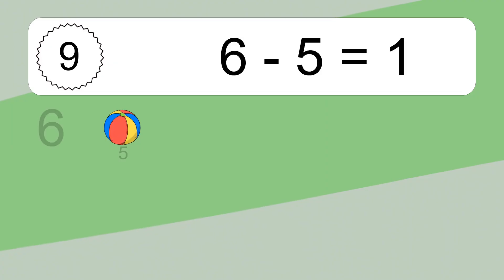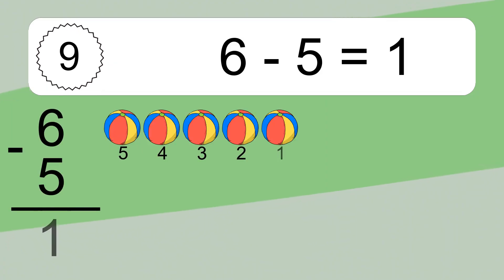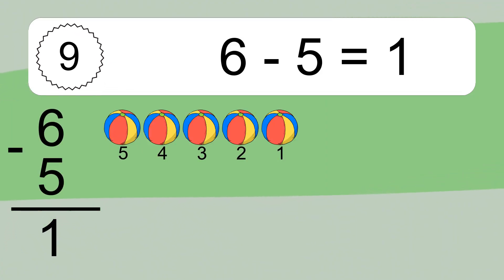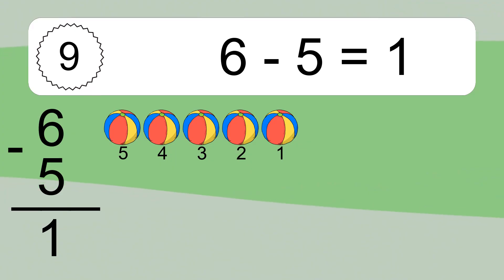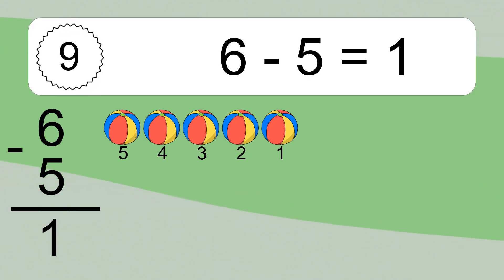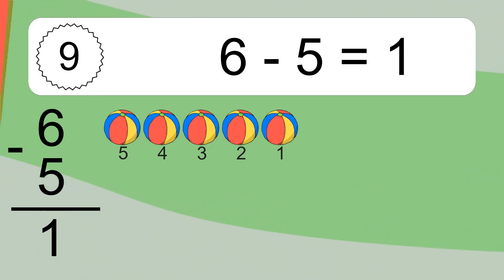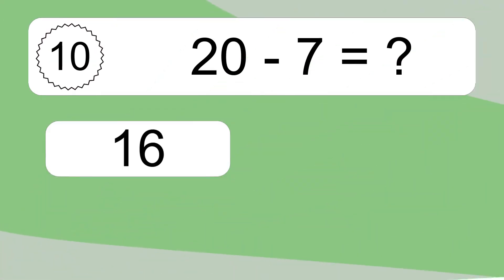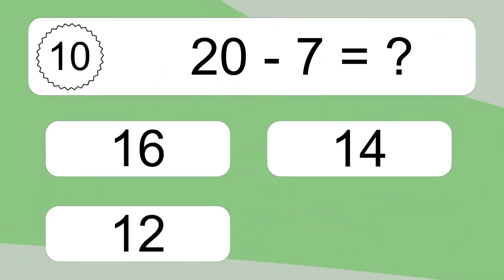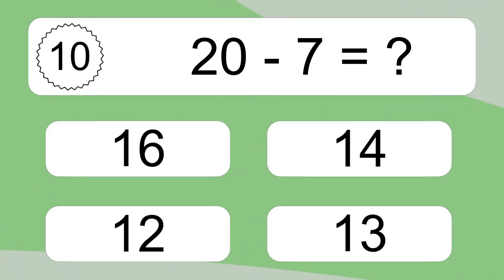20 minus 5 equals what? 20 minus 5 equals 15. Let's count it: 5, 4, 3, 2, 1.